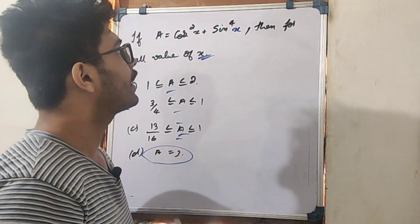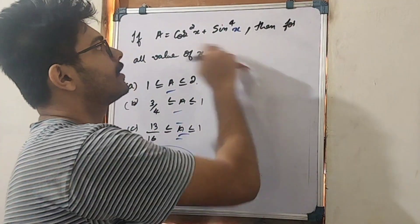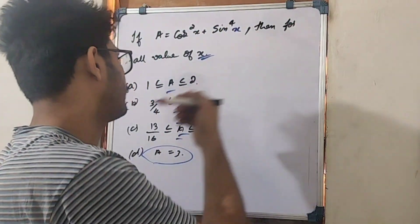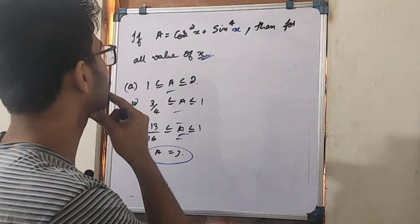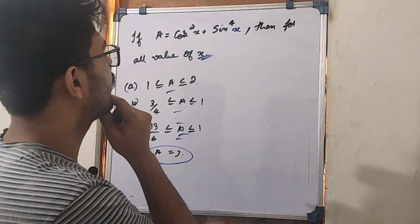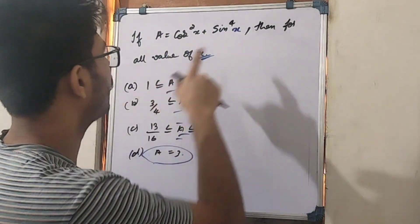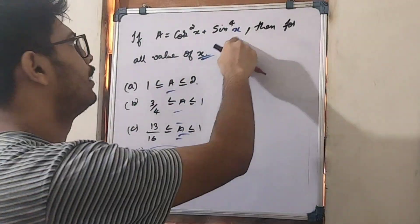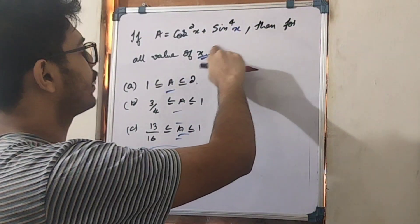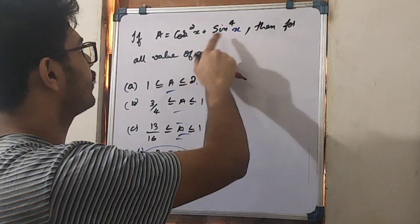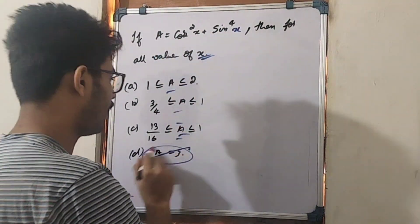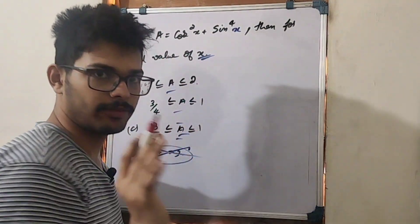If we have trial and error — if we substitute x equal to 0, then cos²(0) = 1 and sin⁴(0) = 0, so A is equal to 1. A is 3/4 and the answer options include these values.